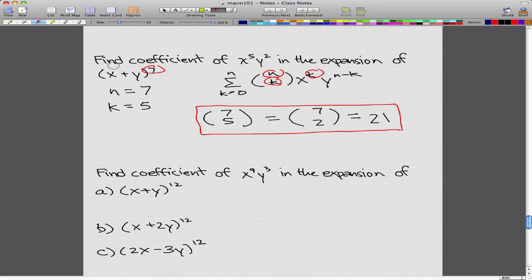All we have to do here is, 12 is our n, and we want x^9y^3, so k is pretty much our 9.